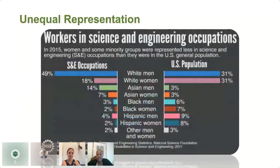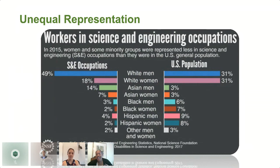Here we're looking at data from the NSF — the National Science Foundation — for science and engineering positions. On the right-hand side you can see the percentage representation for the U.S. population; on the left-hand side, the percentage within science and engineering positions. Certain groups are not proportionally represented, such as women in general, Black men, Black women, Hispanic men, and Hispanic women. There is certainly an urgent need to close these gaps, which are present not just in science and engineering, but across all STEM fields.